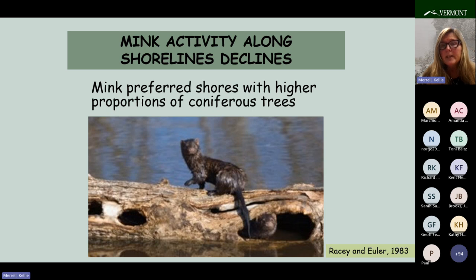In central Ontario, they found that mink activity decreased as a function of the level of lakeshore development. Along buffered shores, mink activity varied depending on tree types — shores dominated by deciduous trees were not used as much by mink, but as the proportion of conifer trees along the lakeshore increased, so did mink activity. The clearing of vegetation from developed lots was responsible for the decline in mink activity along developed shores.